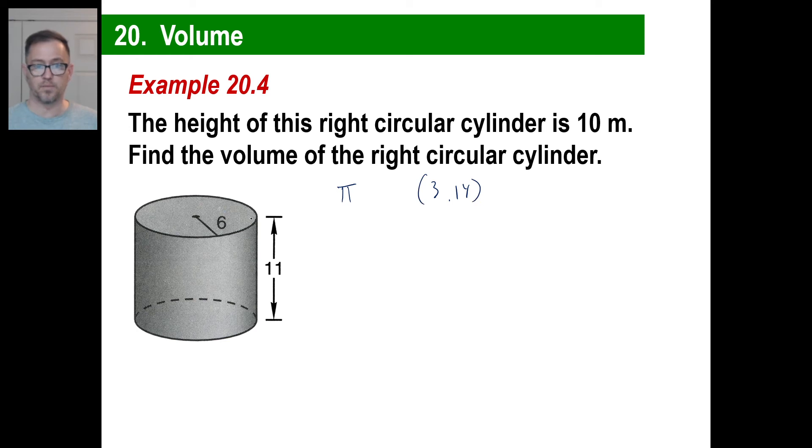And then the radius squared would be 6 squared, which is 36. There you go. And all that, of course, we're going to multiply by the height, which is 11. Boom. Now, I'm not going to even bother to do that. I mean, that's what we can call it. You guys can do that. That's all we need to do.